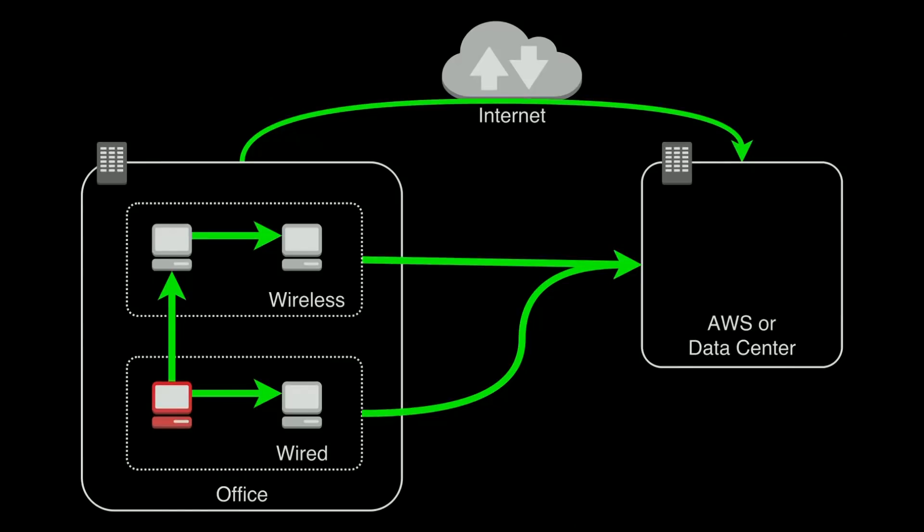Let's go to a completely hypothetical situation that would never, ever happen in the real world. A contractor comes on site to install some updates in, say, your HVAC system or your point-of-sale system. He plugs into your network, and to a lot of your network security tools, he looks like any other IP on the network.